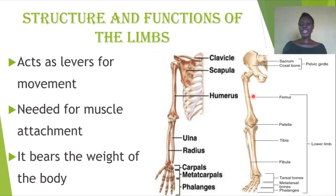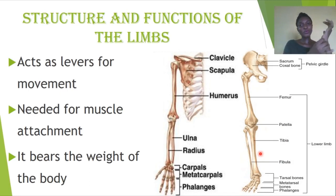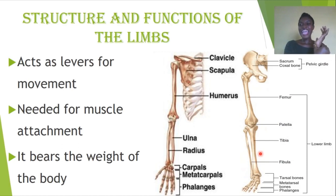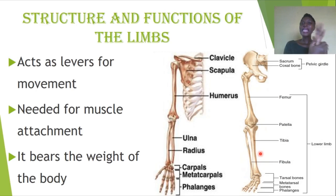Similarly to the forelimbs, the hind limbs follow the same pattern but with different names. In place of the humerus we have the femur, and in place of the radius and ulna we have the tibia and fibula — with the tibia being the longer part. In place of the carpals we have the tarsals, and branching from the tarsals are the metatarsals — just as the metacarpals branch from the carpals in the upper limbs.